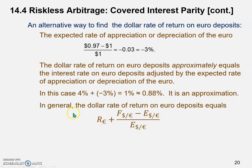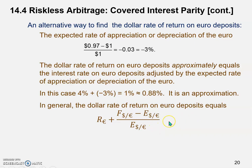In general, we can derive the following formula for the dollar rate of return on euro deposits. The first part, i_euro, is simply the interest rate offered on the euro deposit — the return from the euro deposit. The second part captures appreciation or depreciation: it's the forward rate minus the spot rate, divided by the spot rate — the percentage change in the value of the euro.